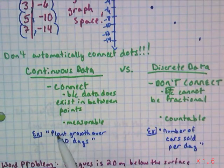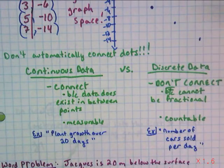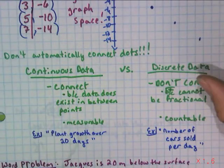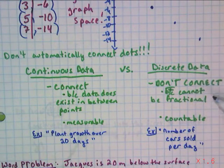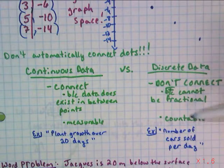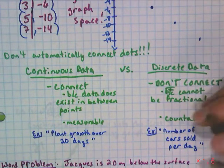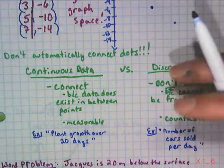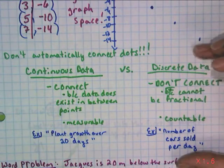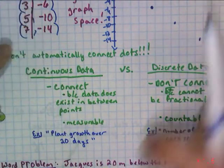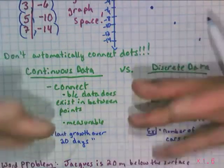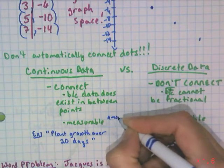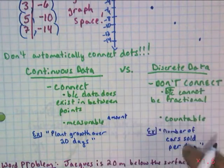An easier way to think about this is anything that is measurable can be continuous. For instance, you measure plant growth over 21 days. It could grow 1.2 inches, 1.25 inches, 1.7 inches. It doesn't just have to be 1 inch, 2 inch, 3 inch. Versus discrete data where you do not connect the dots because you can't have anything that's not a whole. An example would be the number of car sells per day. You sell 1 car, 2 cars, 3 cars, but you do not sell 5.7 cars. If it is limited to whole numbers, it is discrete. Do not connect the dots. Continuous, do connect because there exists data in between those points.